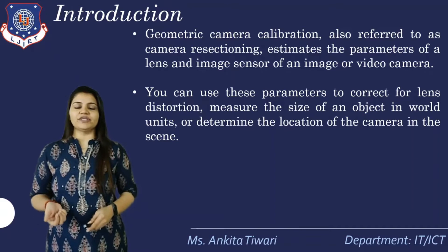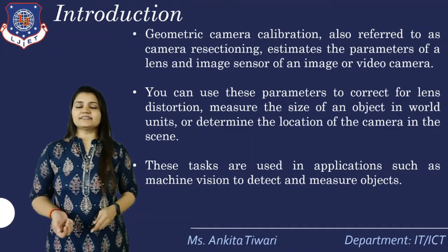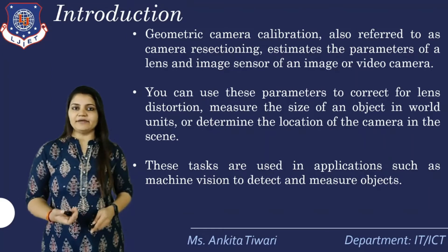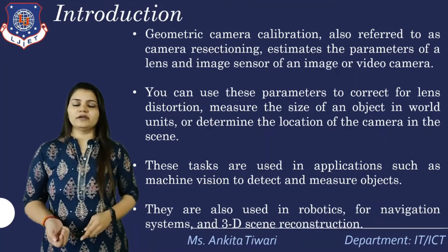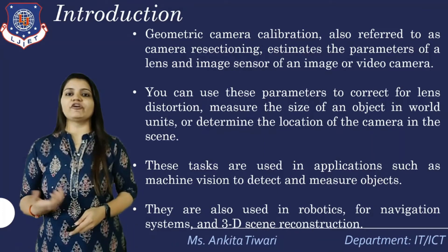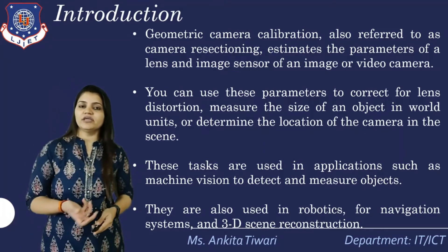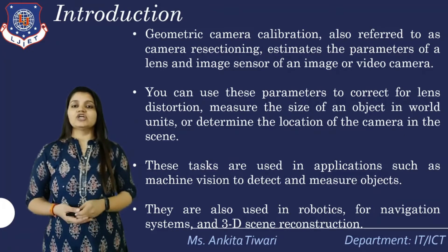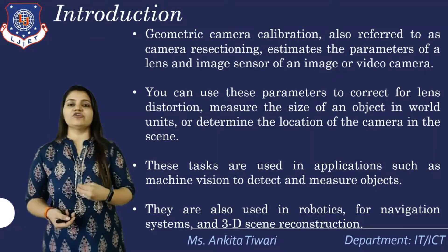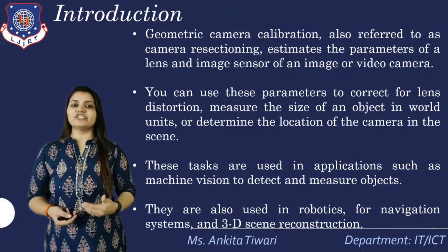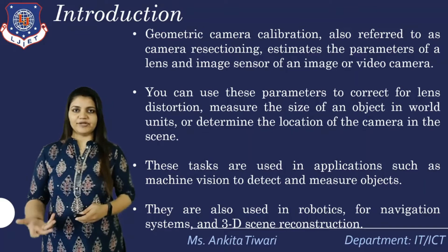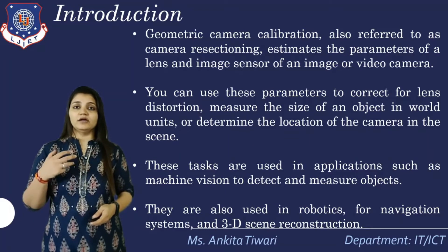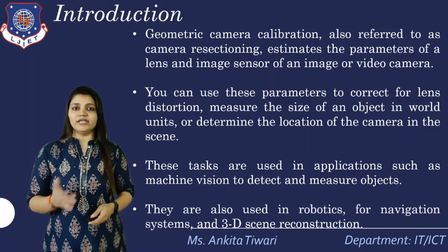Camera calibration can also determine the location of the camera in the scene. These tasks are used in applications such as machine vision, where we can detect and measure objects. We also use these concepts in robotics for navigation techniques and for reconstruction processes. Machine vision basically uses camera calibration parameters to make the image very accurate for detection and measurement of objects.